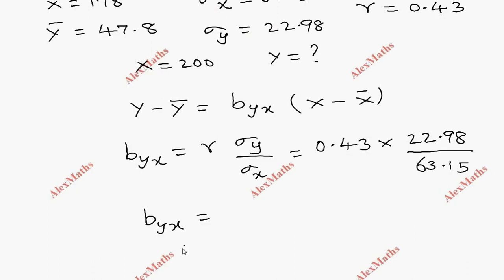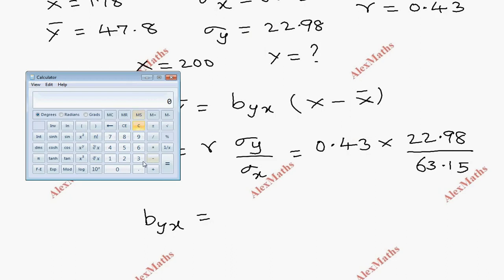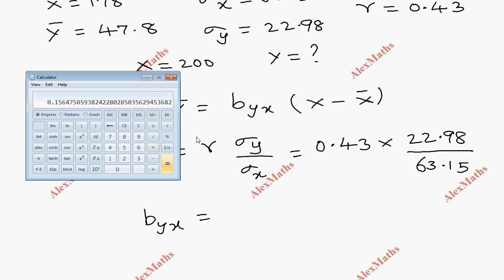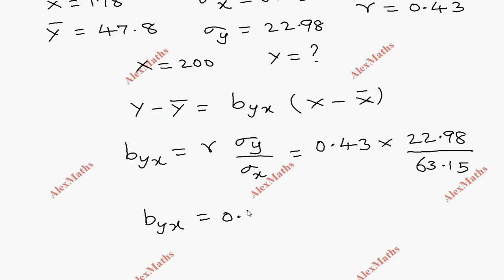Calculating b-yx: 0.43 into 22.98 divided by 63.15, we get the value 0.1564, so b-yx is approximately 0.156.